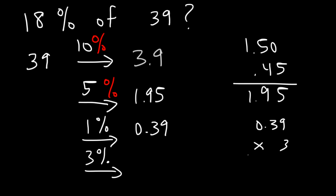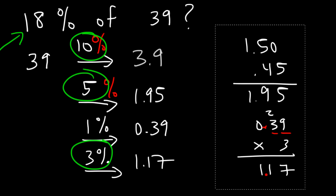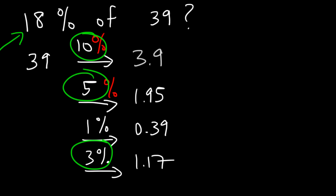Let's multiply 0.39 by 3: 3 times 9 is 27, and 3 times 3 is 9 plus 2, that's 11. With two digits to the right of the decimal, 0.39 times 3 is $1.17. Now we add 10% plus 5% plus 3%, which adds up to 18%, so we add 3.9, 1.95, and 1.17.